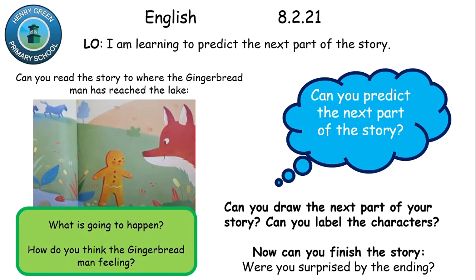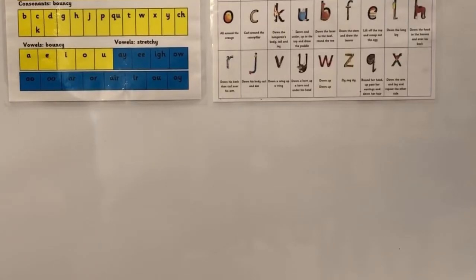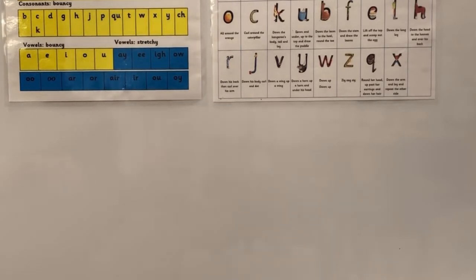Excellent job predicting the next part of the story. I would now like you to draw the next part of your story, and then can you label the characters - so the fox and the gingerbread man? We are now going to draw the next part of our story. The next part of my story was the fox swimming through the lake with the gingerbread man, so I'm going to draw a lake.